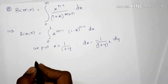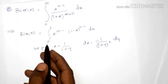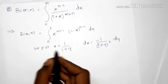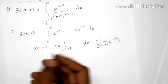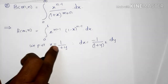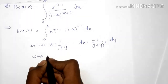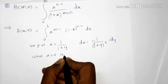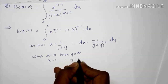Now for the limits: when x equals 0, y equals infinity, because 1 plus y goes to the denominator and 1 upon 0 is infinity. When x equals 1, then 1 plus y equals 1 by 1, therefore y equals 1 minus 1, that is 0. So when x equals 0 then y equals infinity, and when x equals 1, y equals 0.